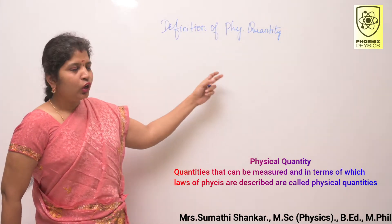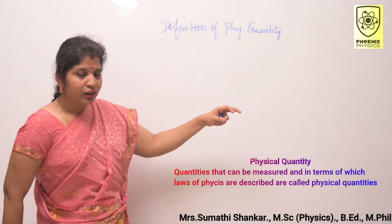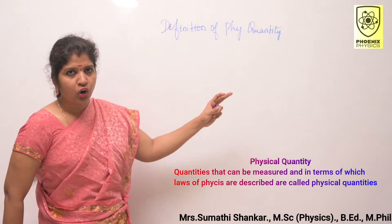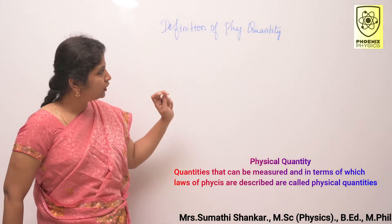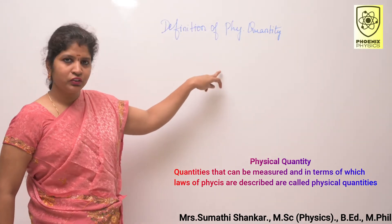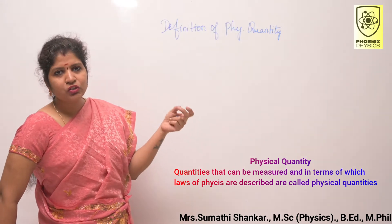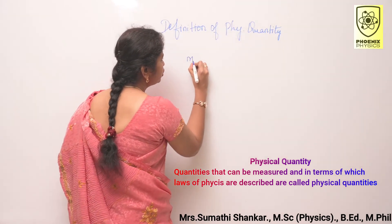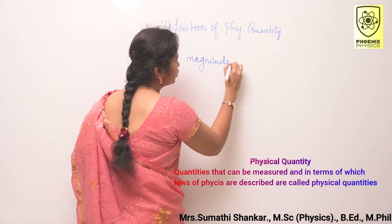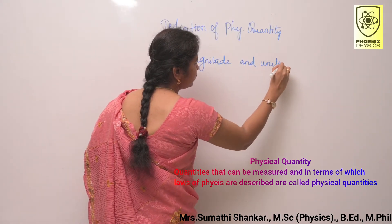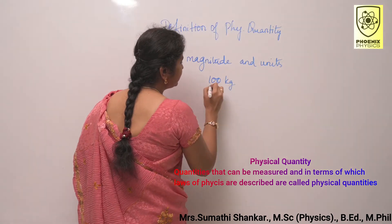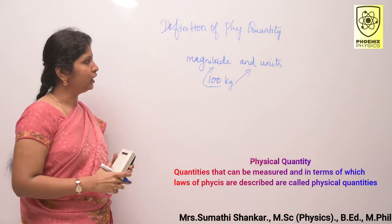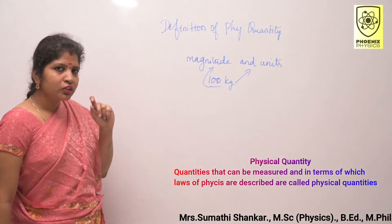Definition of physical quantities: quantities that can be measured and in terms of which laws of physics are described are known as physical quantities. For example, length, mass, time, energy, speed — all are physical quantities. These physical quantities have magnitude and units. For example, 100 kilogram: here 100 is the magnitude and kilogram is the unit.